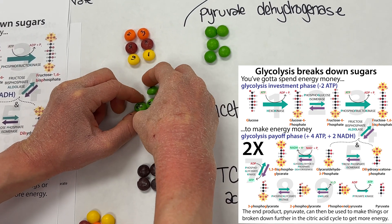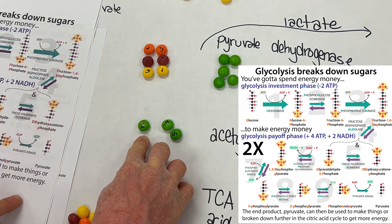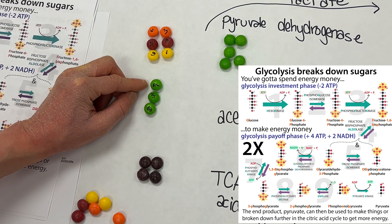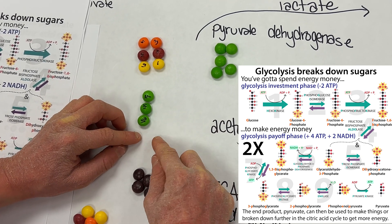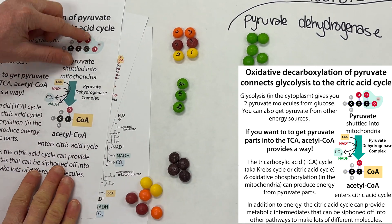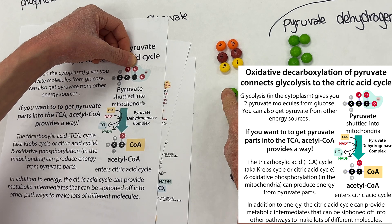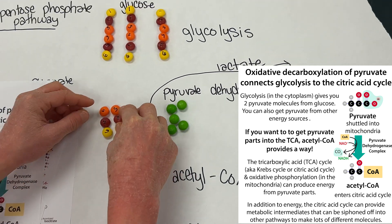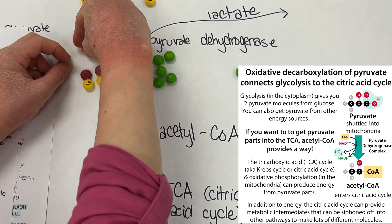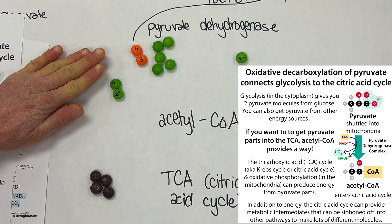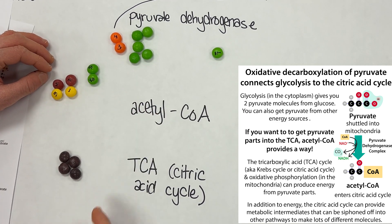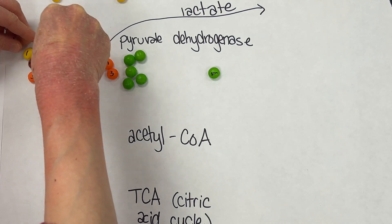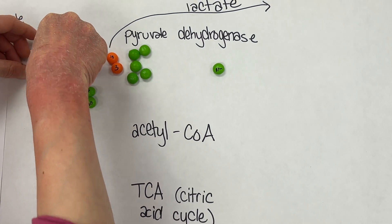So for our pyruvate, the 1 or 6 position is going to be on the bottom. Then we have our 2 and 5, which are equivalent, and our 3 and 4, which are equivalent. When you make acetyl-CoA, it's going to be the 3-4 carbons from the original glucose — so we're losing the 3 and 4 at the pyruvate dehydrogenase step. That gives us our acetyl-CoA, and we'd have the 1 or 6, and the 2 and 5 remaining. Let's take these through the pathway and make our acetyl-CoA.